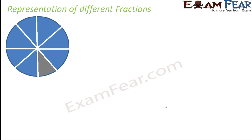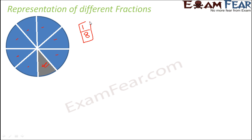Here you see a circle divided into 8 equal parts. Some part of the circle is shaded, and we want to determine what fraction of this diagram is shaded. Out of the eight equal parts, only one part is shaded, so we can say that one eighth of the circle is shaded.